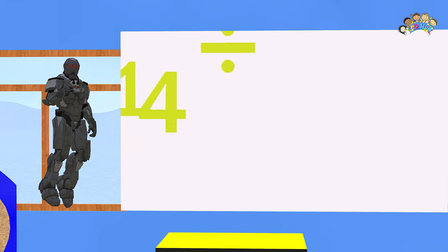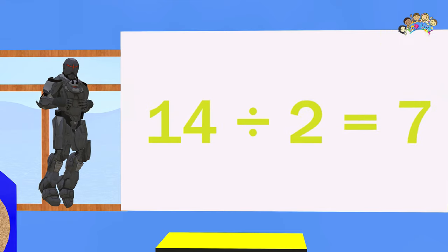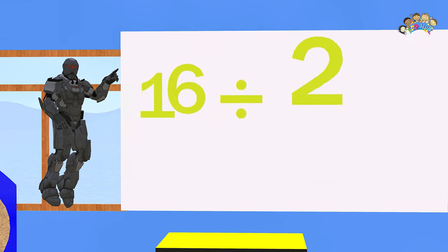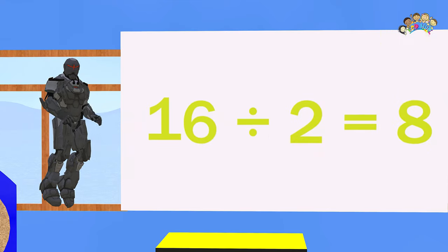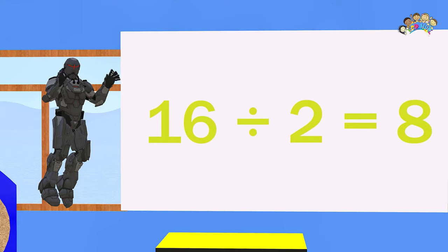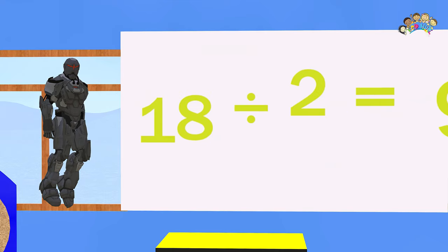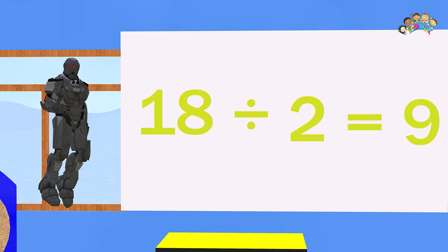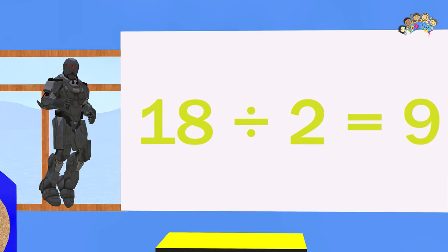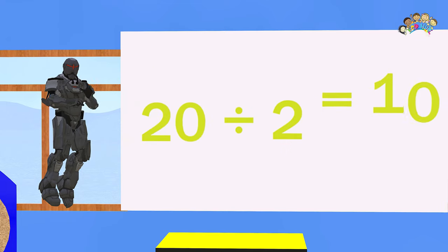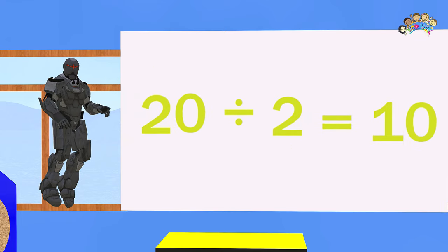Fourteen divided by two equals seven. Sixteen divided by two equals eight. Eighteen divided by two equals nine. And twenty divided by two equals ten.